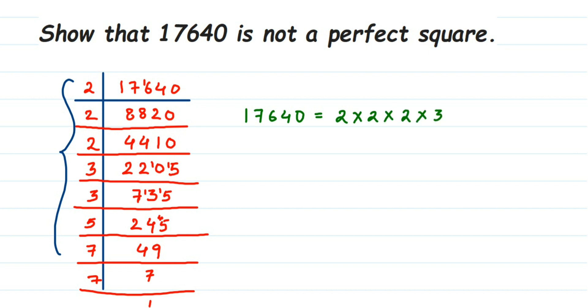So 2 times 2 times 2 times 3 times 3 times 5 times 7 times 7. Now once you have done this, you have to start pairing up. If the number is a perfect square, all the prime factors will be in a pair. Like here you can see, this 2 is forming one pair, 3 is forming one pair, and 7 is forming a pair.